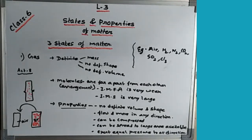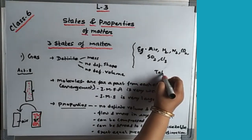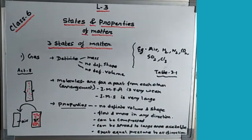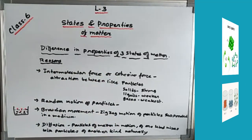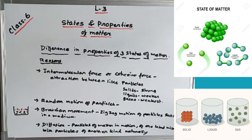The three states of matter have been discussed in detail. Now, what is the difference in properties of the three states? The three states of matter differ in their properties, characteristics, and molecular arrangement. What is the reason behind these differences? The reasons are the intermolecular force of attraction, intermolecular space, and movement of molecules.